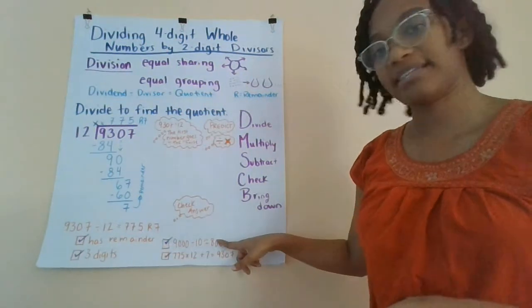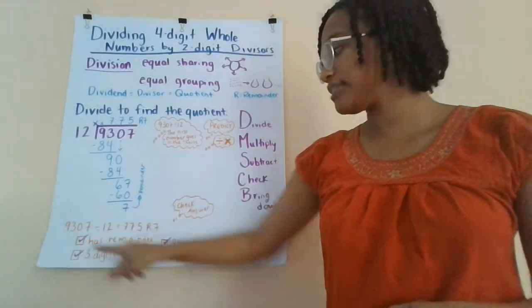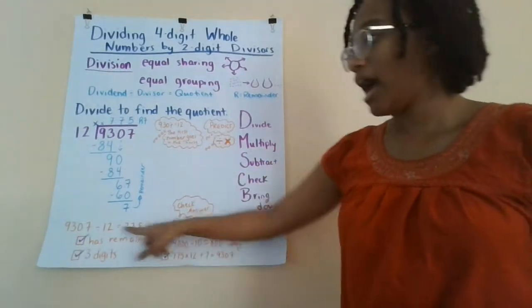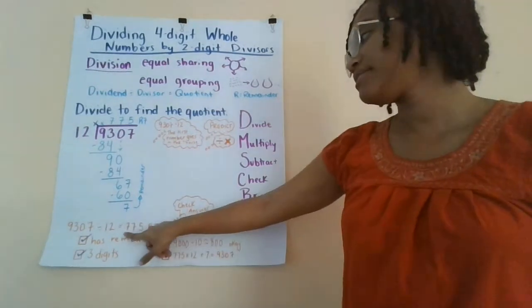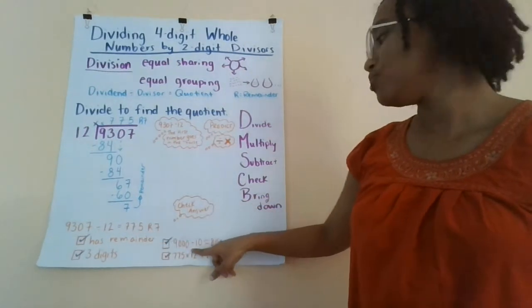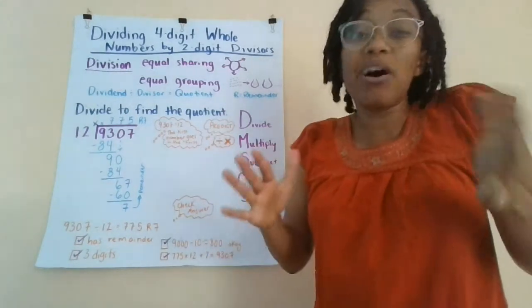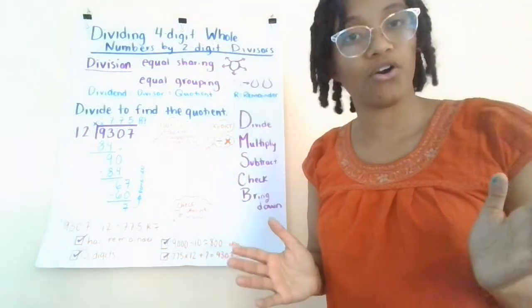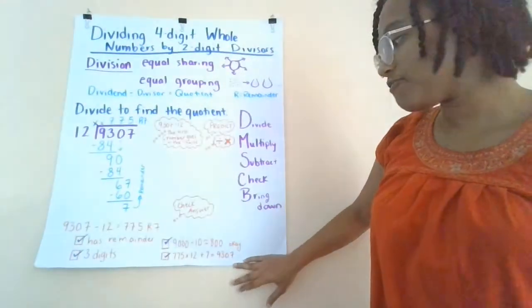Next, we're going to estimate and see if that makes sense. I've rounded 9,307 to 9,000. I've rounded 12 down to 10. And I've rounded 775 remainder 7 to 800. 9,000 divided by 10 is about 800. That's not too far off. I think that's reasonable. So we'll give that a check.